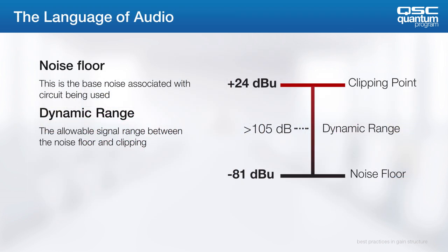Let's start off by establishing some basic vocabulary. Clipping is the point at which you can no longer reproduce a signal that looks or sounds like what is usable. The noise floor is the base electronic noise of the circuit. The signal level between those two points is what's called the dynamic range.